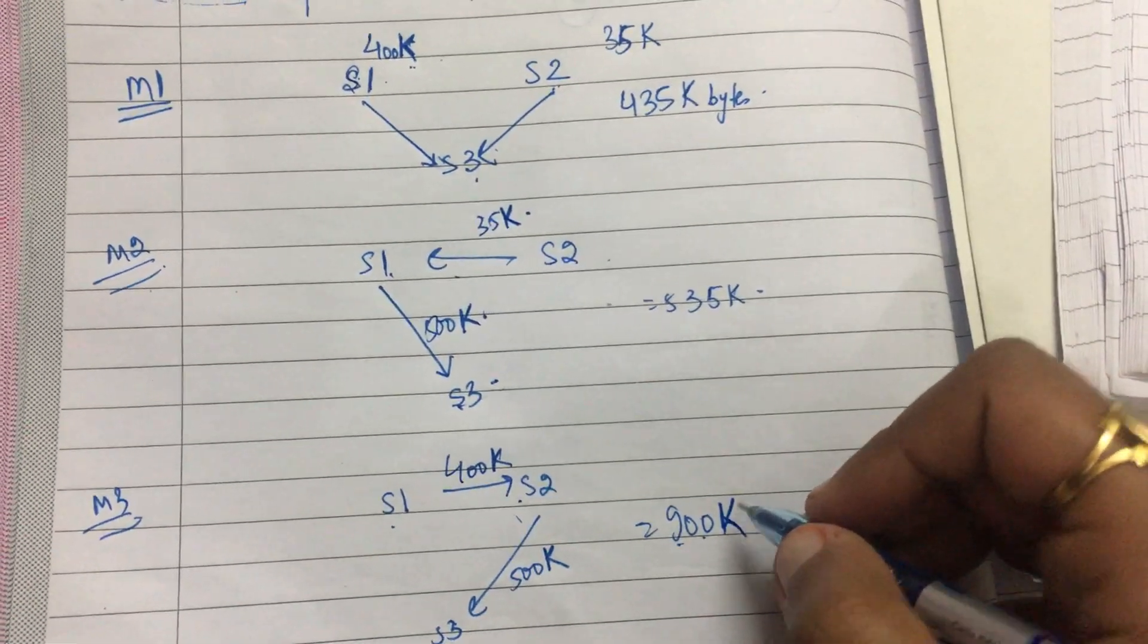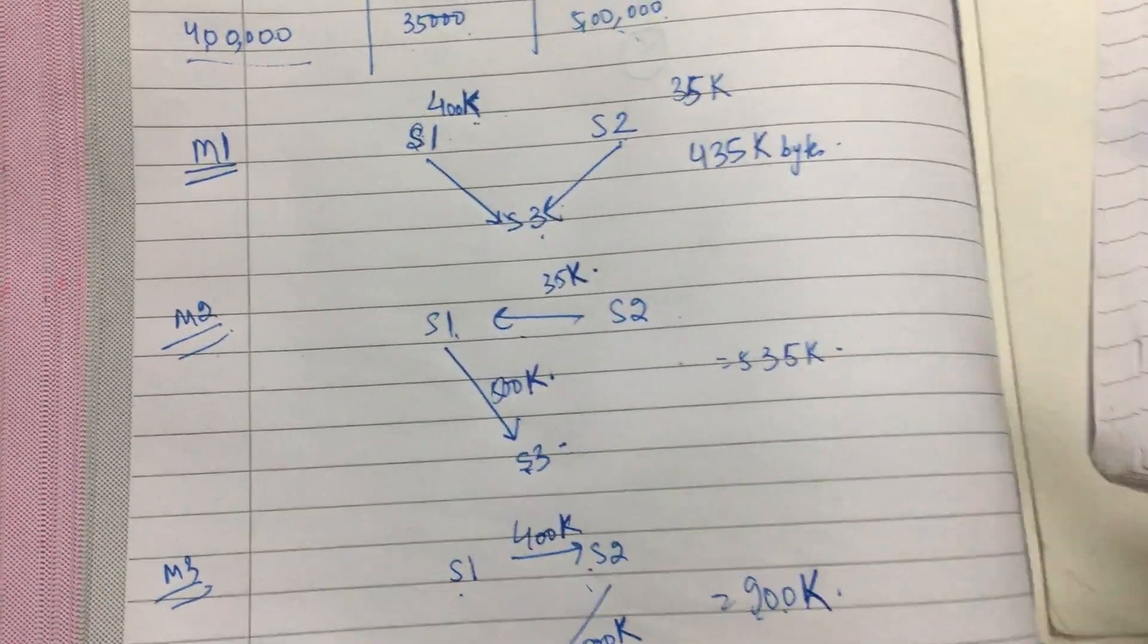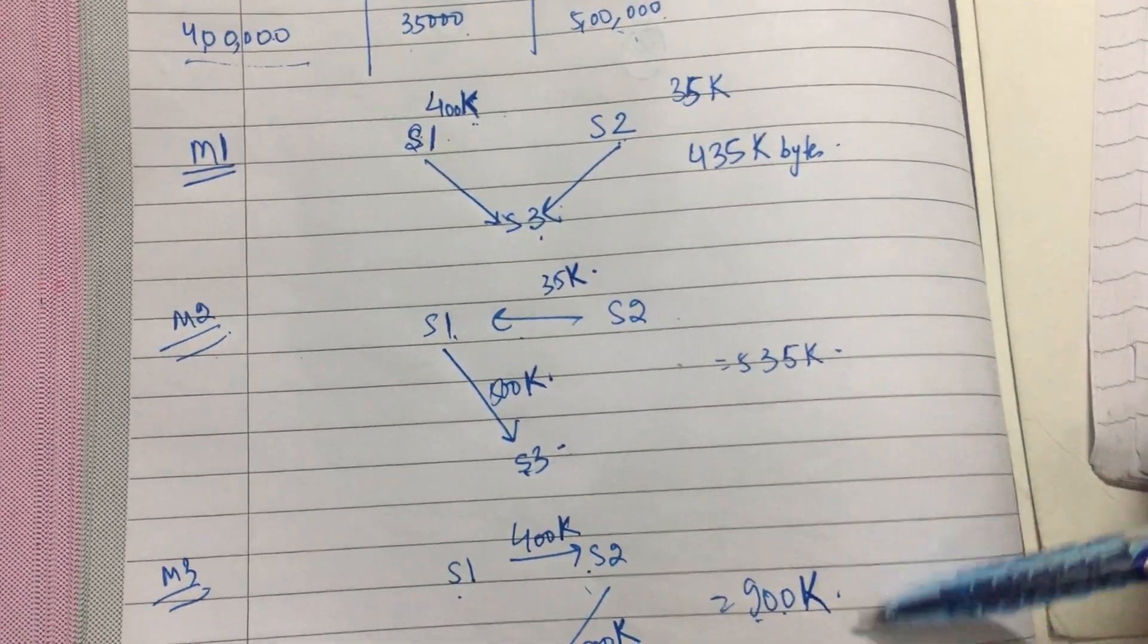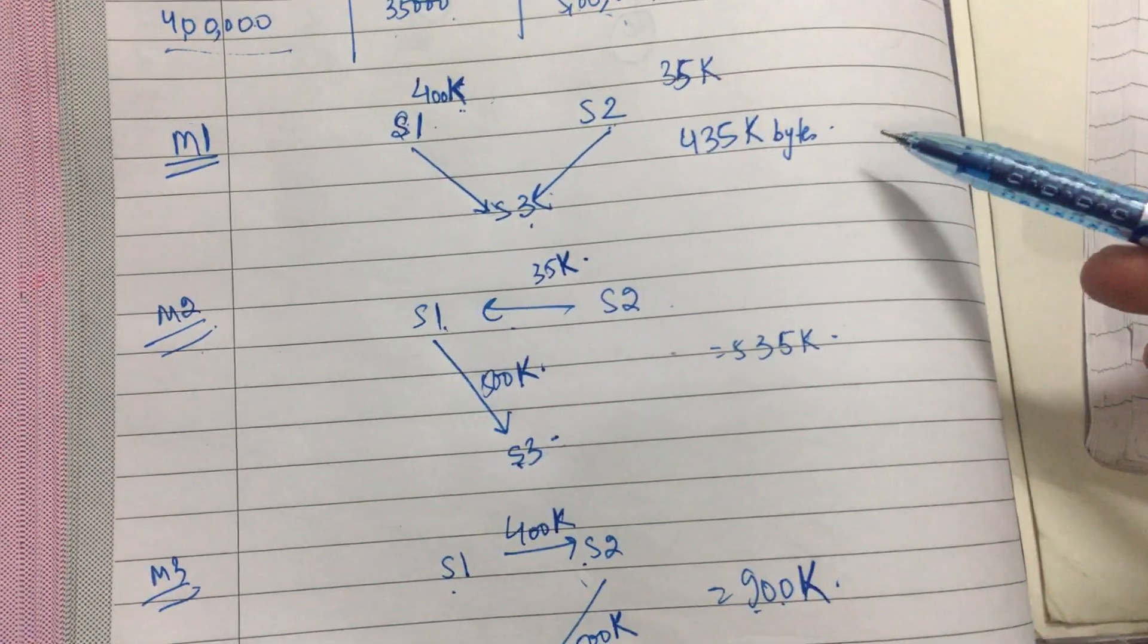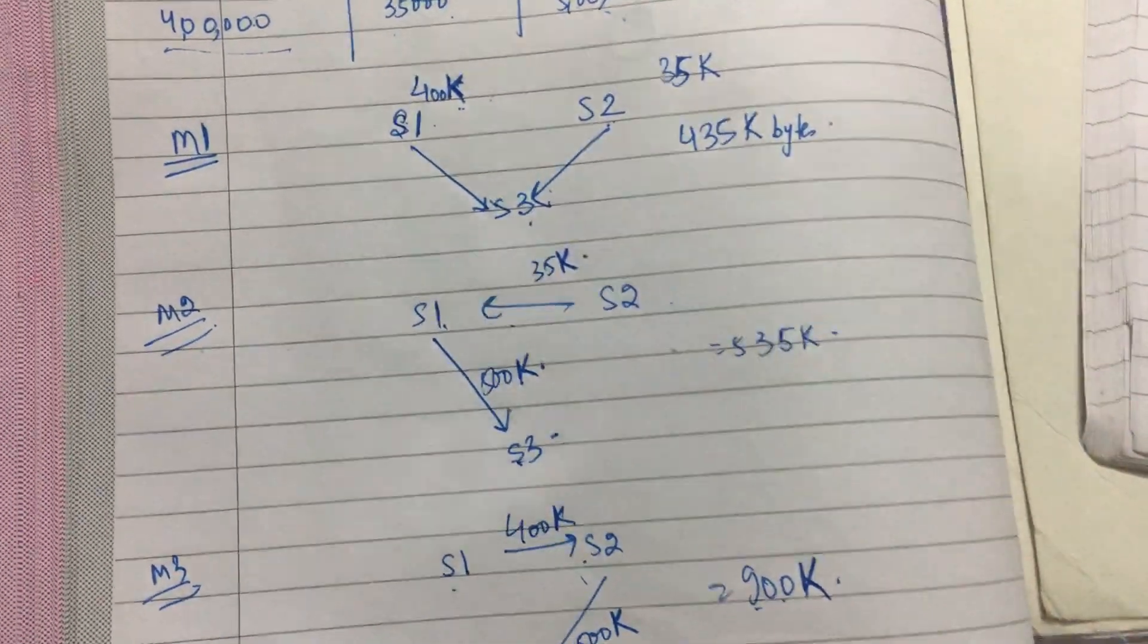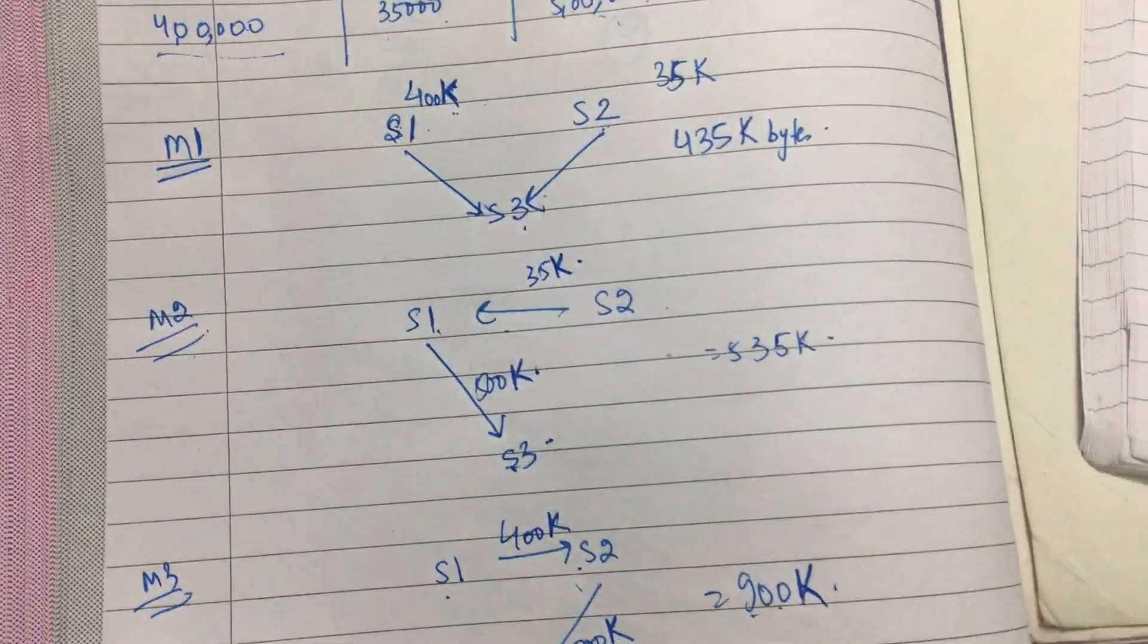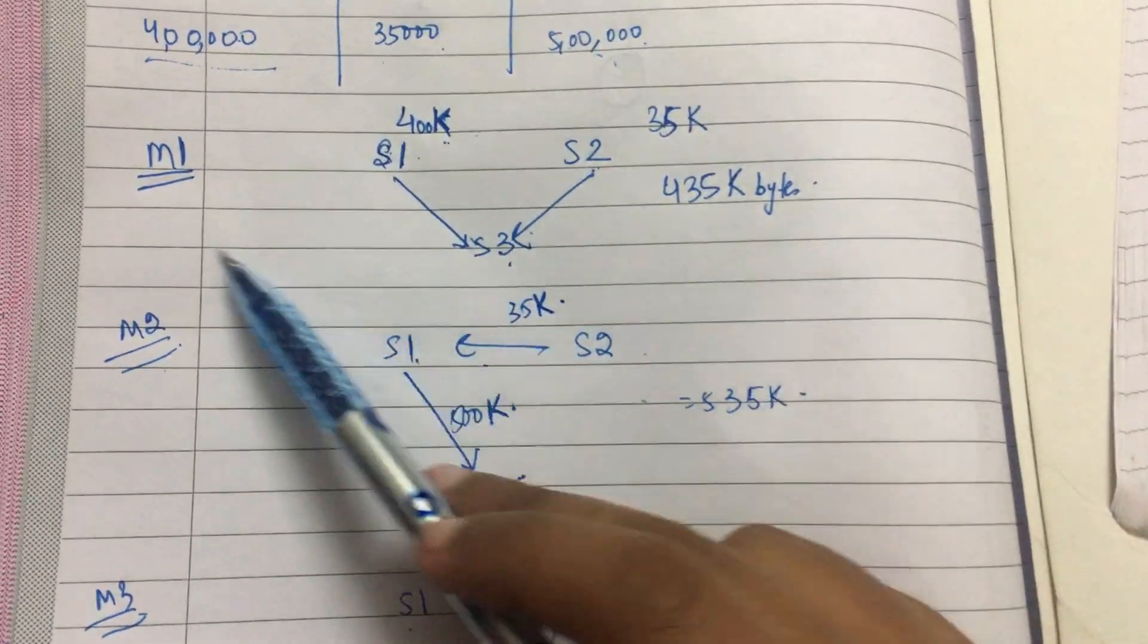So you can see that as my method changes, the number of bytes that I transfer also changes. So the work done is the same, only what is happening - suppose I choose now, which do you think out of the three methods is the best? Out of the three, the best method is method number one.